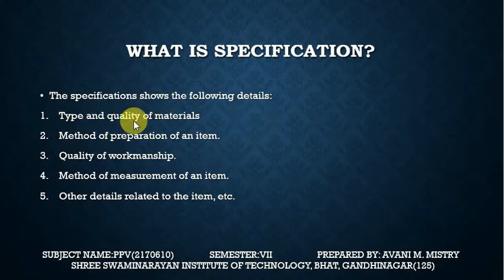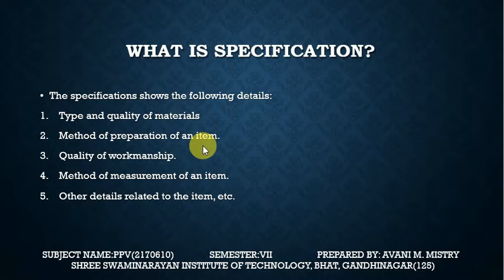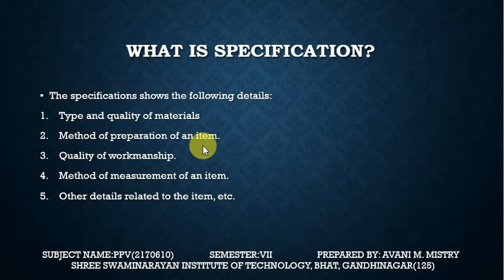The specification shows the following details: type and quality of materials, method of preparation of an item, quality of workmanship, method of measurement of an item — for example, how a given item is to be measured — and other details related to the item.